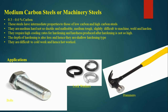The next category is medium carbon steel, also known as machinery steel, with 0.3% to 0.6% carbon. These steels have intermediate properties between low carbon and high carbon steel — medium hard, not so ductile, not malleable, medium tough, and slightly difficult to machine, weld, and harden.